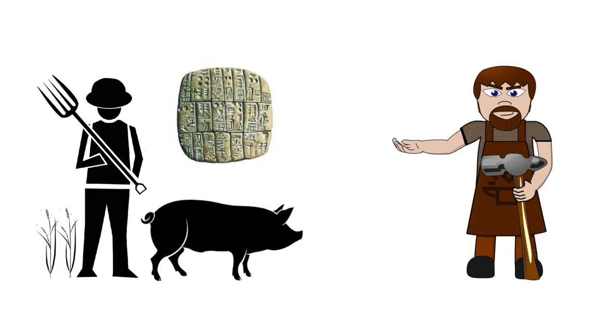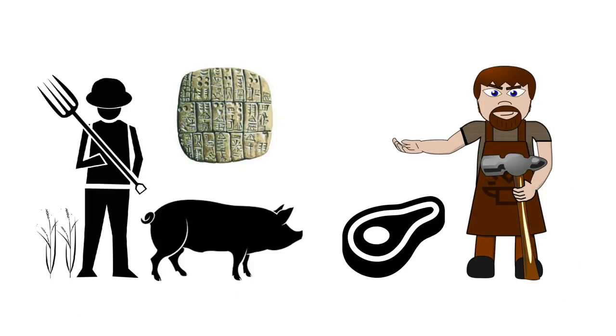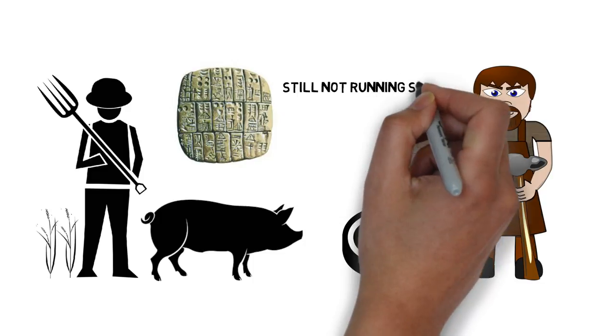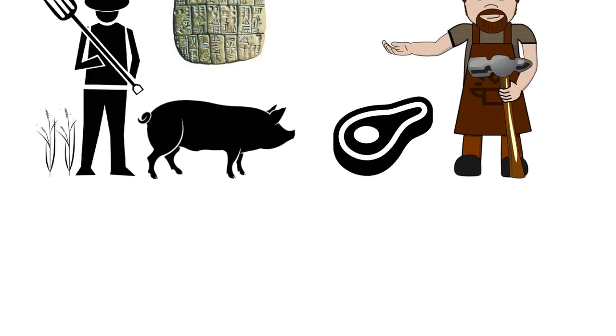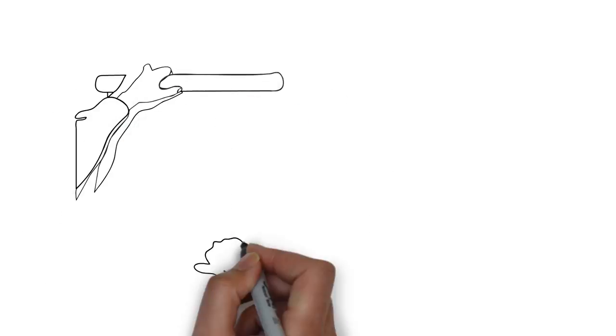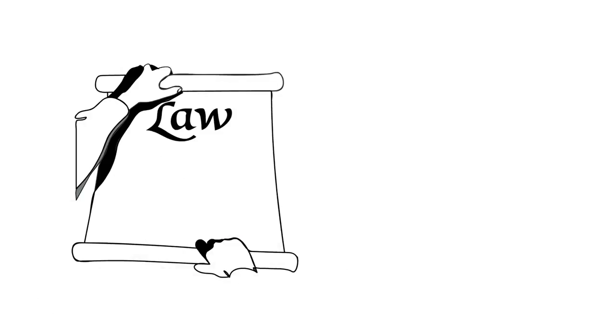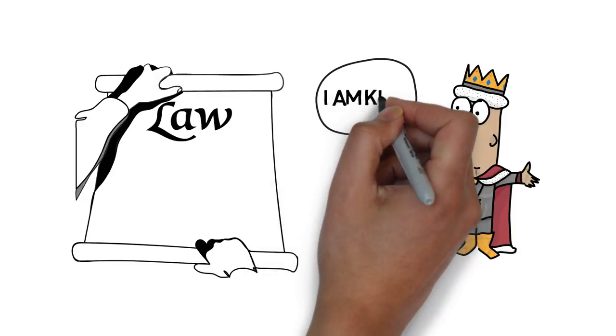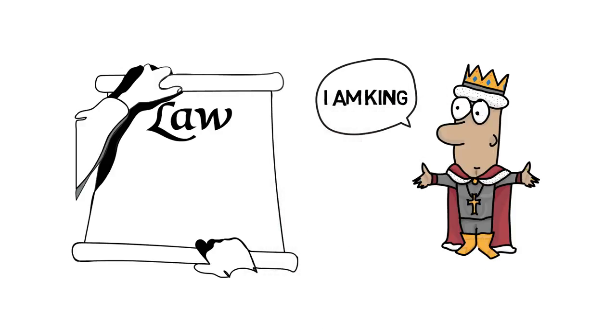Yet this didn't mean the economy suddenly started behaving smoothly and efficiently. In fact, as societies and economies continued to grow, they became more difficult to control and regulate. So what did human societies do? They developed laws to regulate how people behave and systems of authority to ensure that people obey them. Thus, the first hierarchical societies were born, with the king or emperor at the top ruling over everyone else.